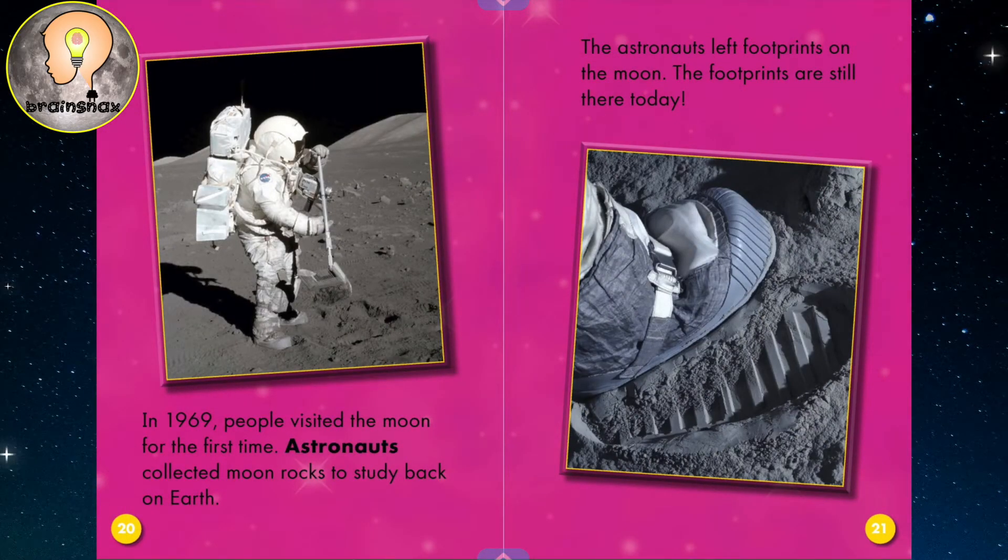In 1969, people visited the moon for the first time. Astronauts collected moon rocks to study back on Earth. The astronauts left footprints on the moon. The footprints are still there today.